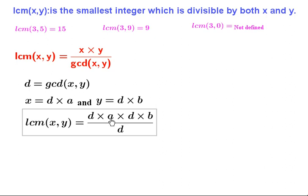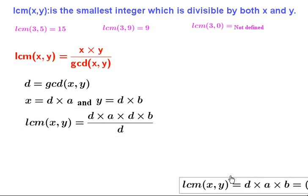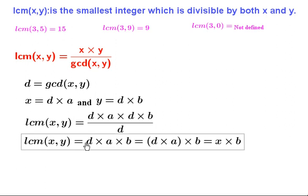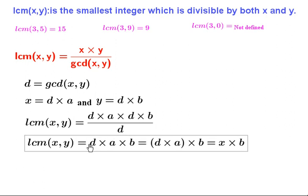Substituting into the equation, we get (d*a * d*b) / d, which simplifies to d*a*b. Clubbing the first two terms, LCM(x, y) = (d*a) * b = x * b. This shows that whatever we are getting is a multiple of x.